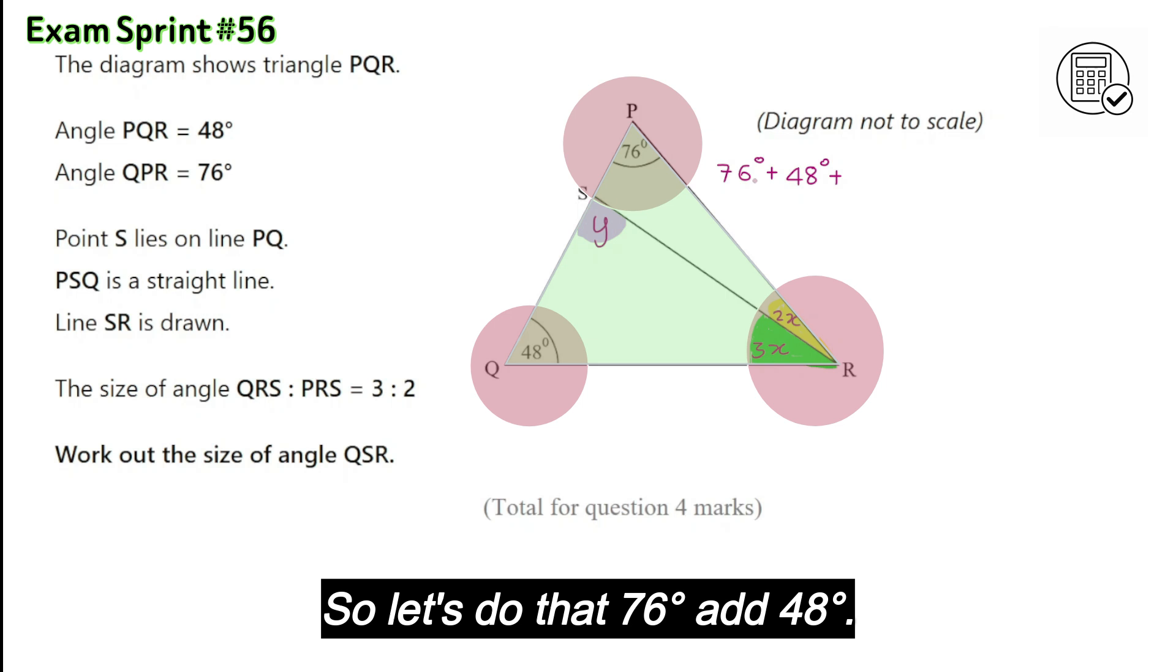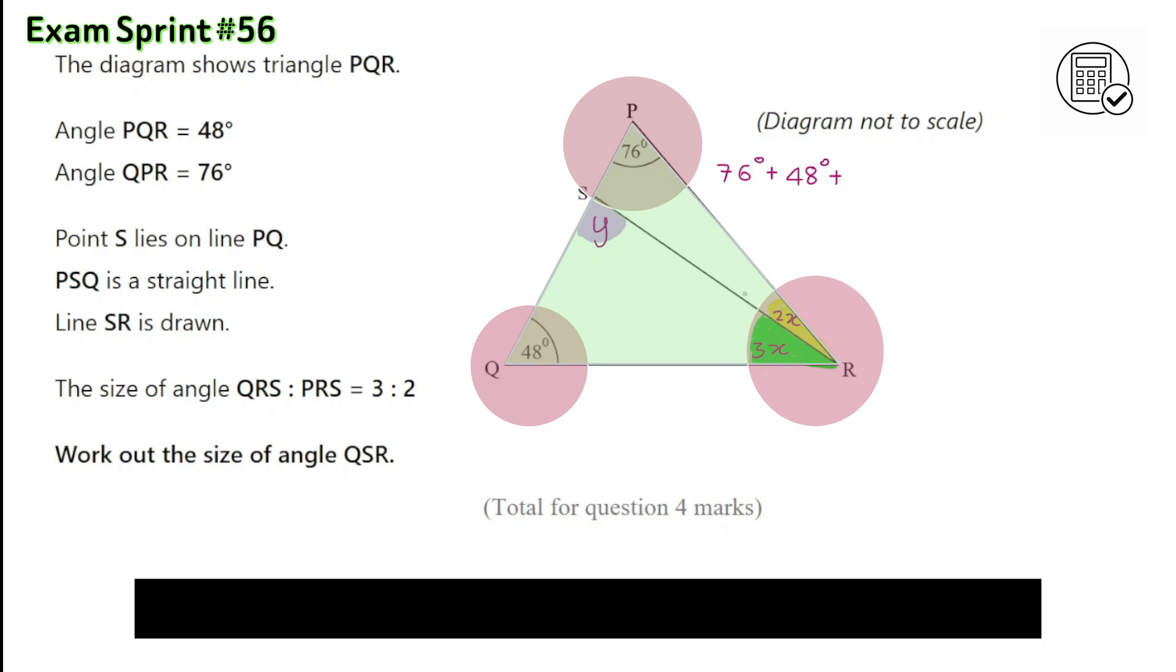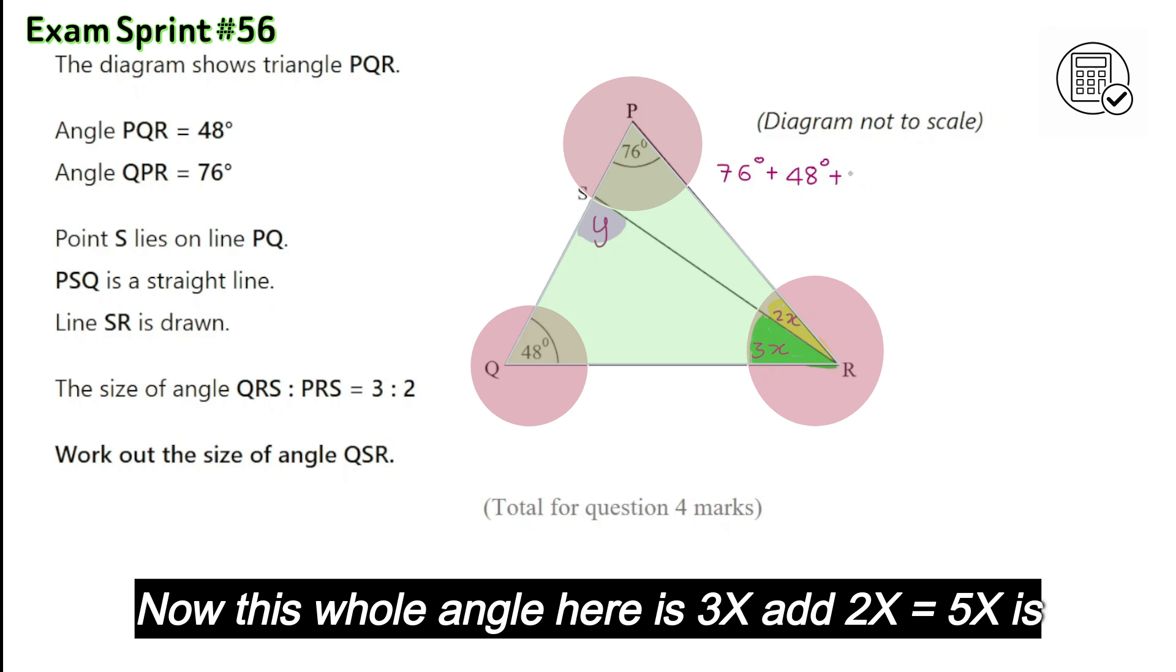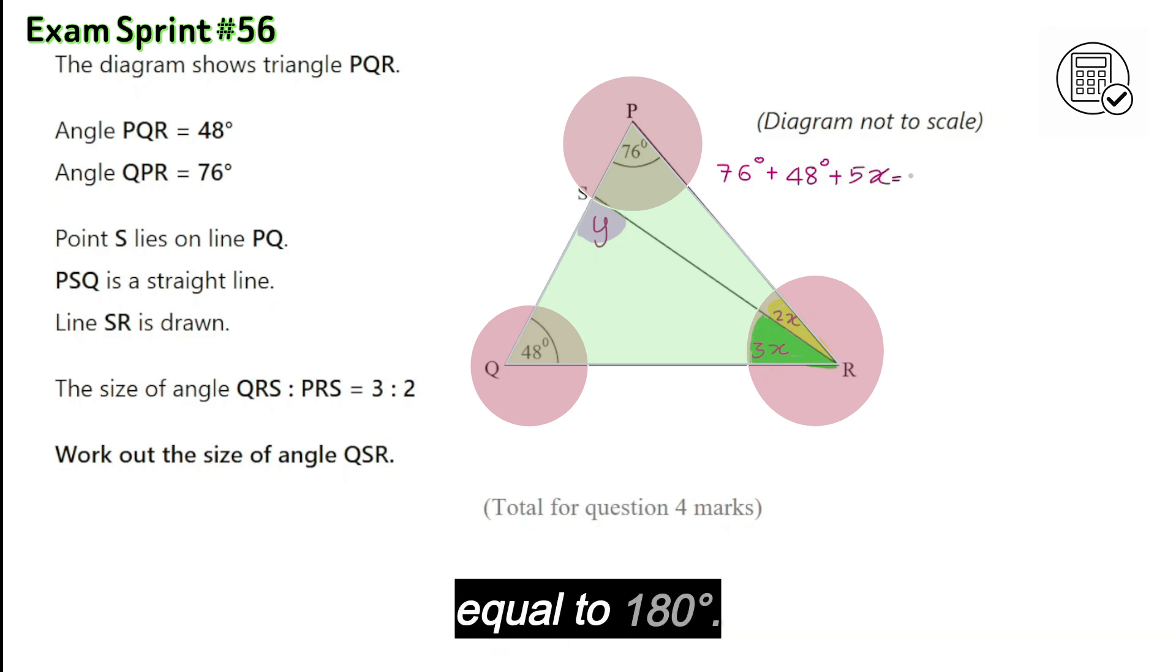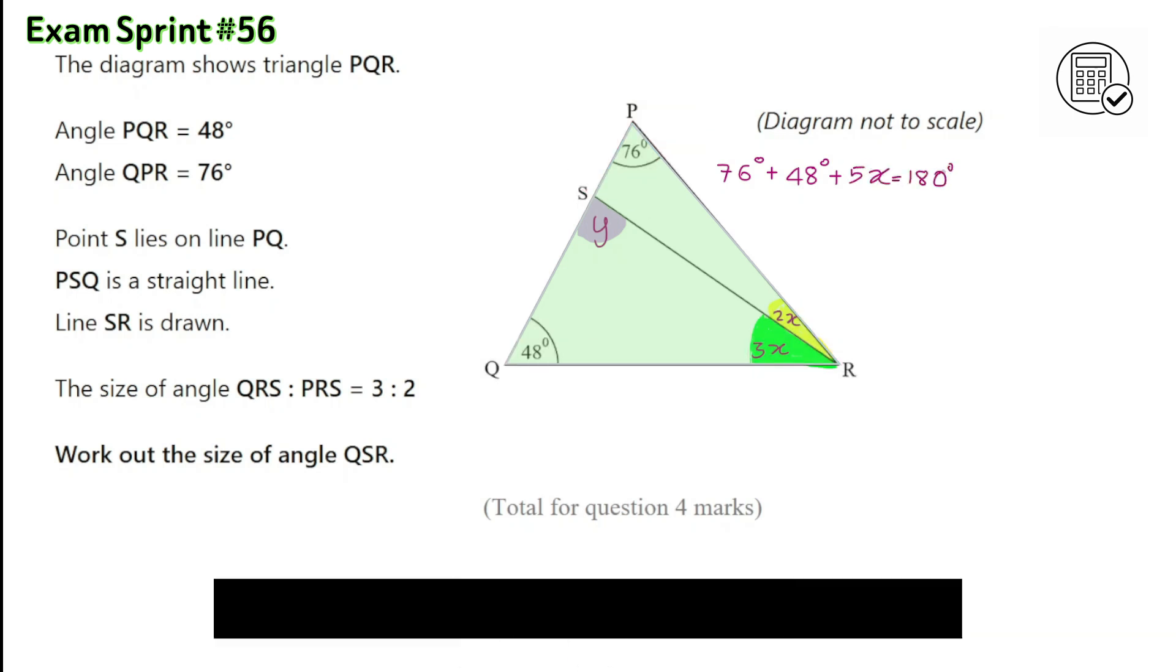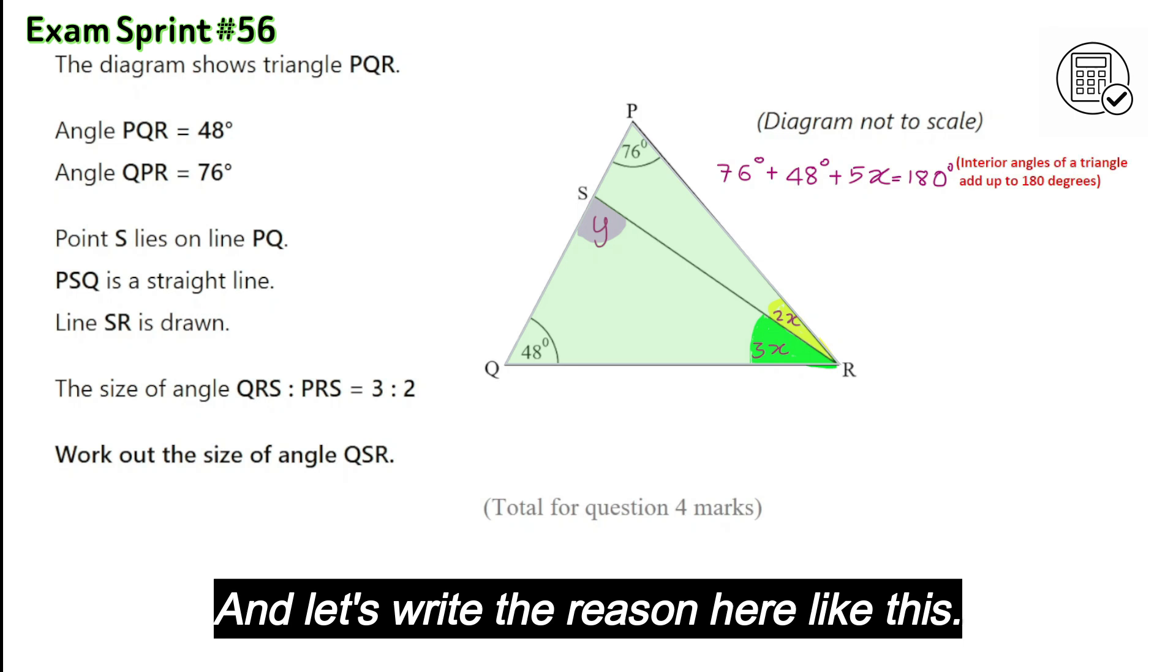76 degrees add 48 degrees. This whole angle here is 3X add 2X, 5X is equal to 180 degrees. And let's write the reason here like this.